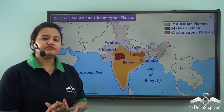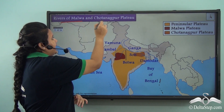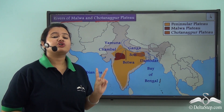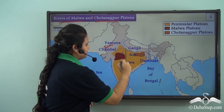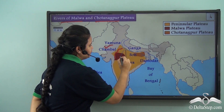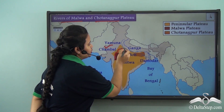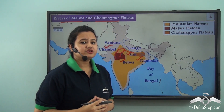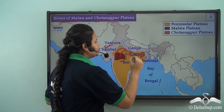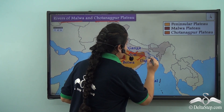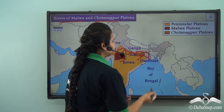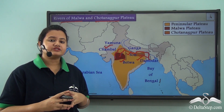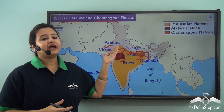A number of rivers arise from the Malwa Plateau and Chhota Nagpur Plateau. Two major tributaries of the Yamuna River — Chambal and Betwa — arise from the Malwa Plateau and flow northwards to join the Yamuna. Also, rivers Son and Damodar, which are major tributaries of the Ganga, originate in the Chhota Nagpur Plateau and later join the Ganga River.